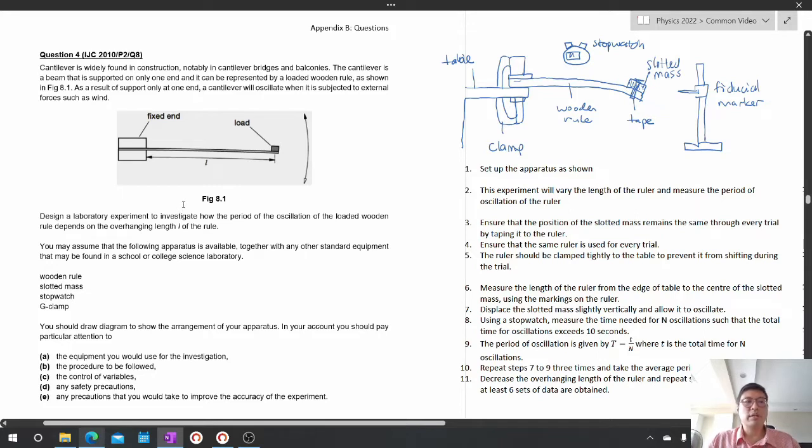We want to design a laboratory experiment to investigate how the period of oscillation T depends on the overlapping length L of the ruler. We may assume the following apparatus is available: the wooden ruler, slotted mass, stopwatch and G-clamp.